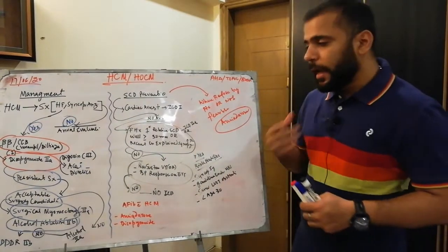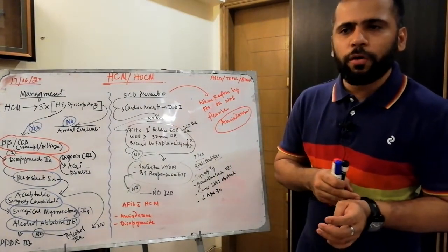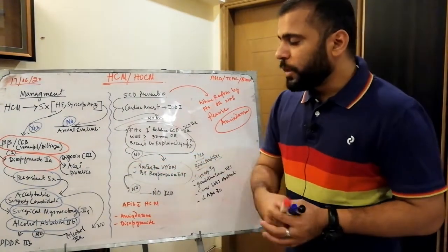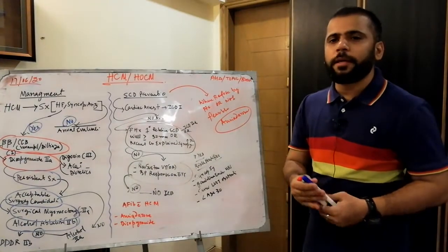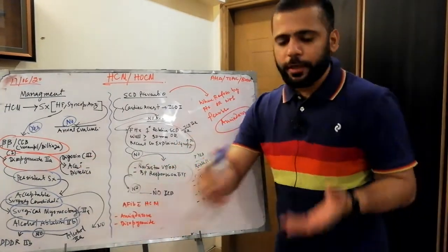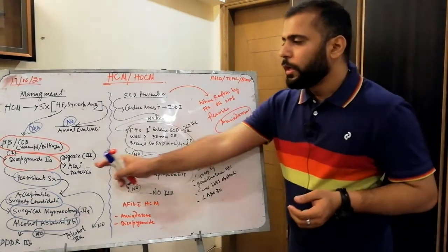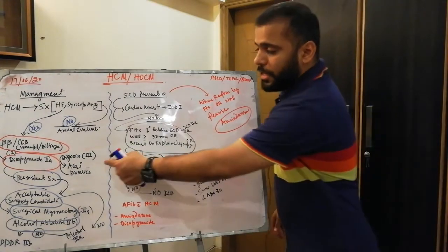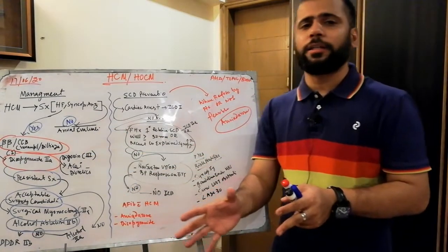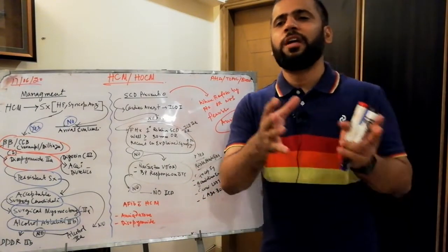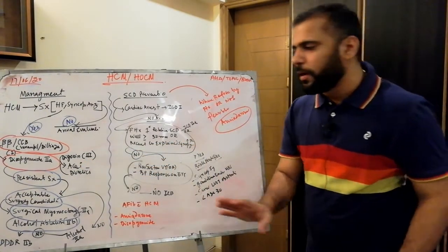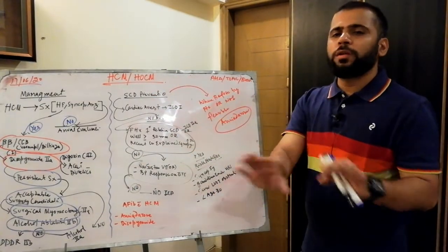ACE inhibitors are vasodilators that decrease preload and afterload. You cannot give ACE inhibitors to asymptomatic HCM patients or those without heart failure or reduced EF. If your patient has resistant hypertension despite beta blockers and calcium channel blockers, ACE inhibitor is class 1. If your patient has burnt-out cardiomyopathy or decreased EF due to HCM, ACE inhibitor is indicated as in standard heart failure management.